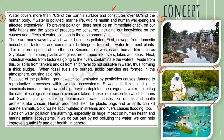Let's go to paragraph number two. There are many ways by which water becomes polluted. First, sewage from domestic households, factories, and commercial buildings is treated in water treatment plants and is often disposed of into the sea. Second, solid wastes and human litter such as styrofoam, aluminum, plastic, and glass are dumped into rivers, lakes, and seas. Next, industrial wastes from factories going to the rivers contaminate the waters. Oil spills from tankers and oil from ships do not dissolve in water, thus forming a thick sludge. When fossil fuels are burned, acidic particles are formed in the atmosphere, causing acid rain.